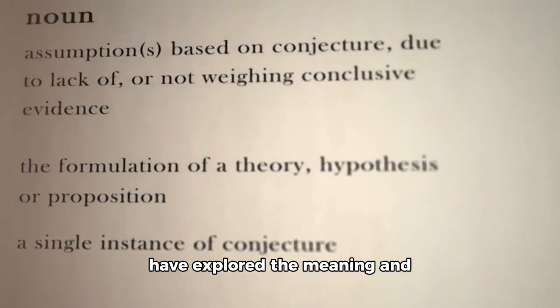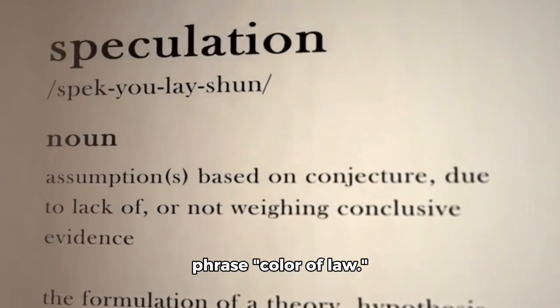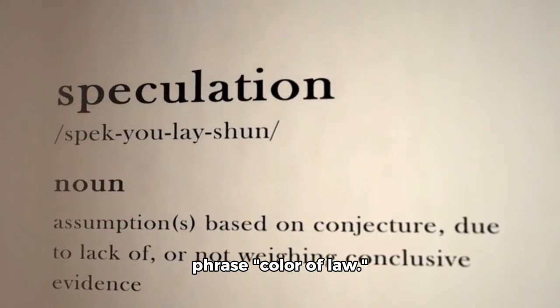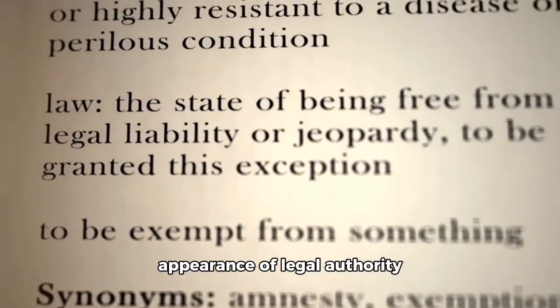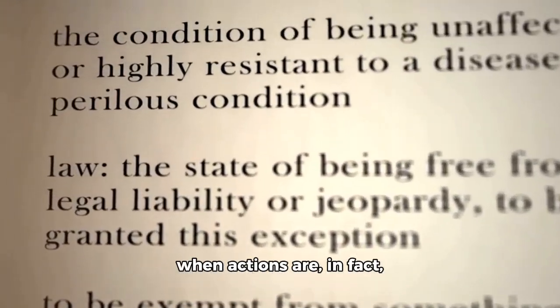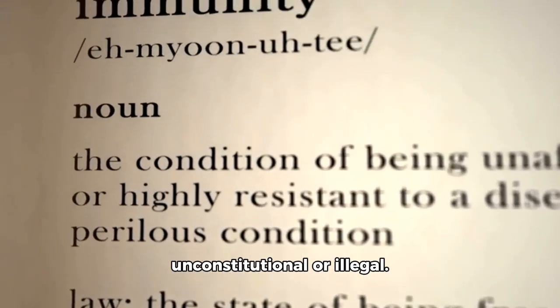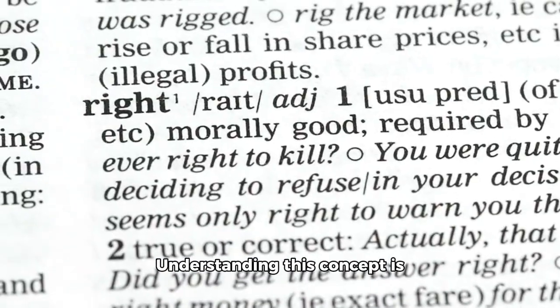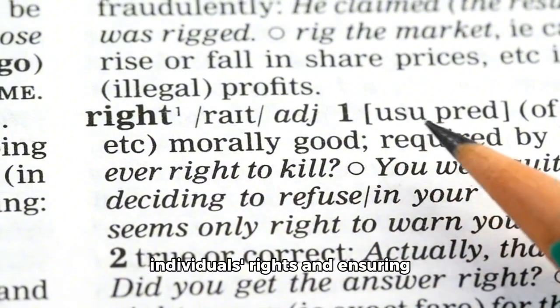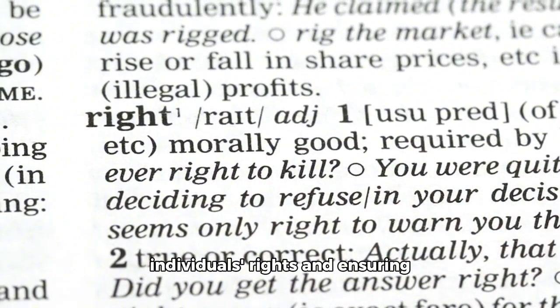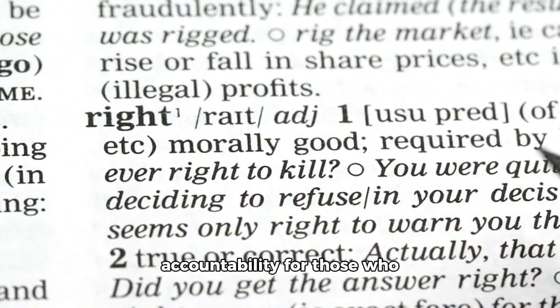We have explored the meaning and implications of the legal phrase 'color of law.' Remember, it represents the appearance of legal authority when actions are, in fact, unconstitutional or illegal. Understanding this concept is crucial in protecting individuals' rights and ensuring accountability for those who abuse their positions of power.